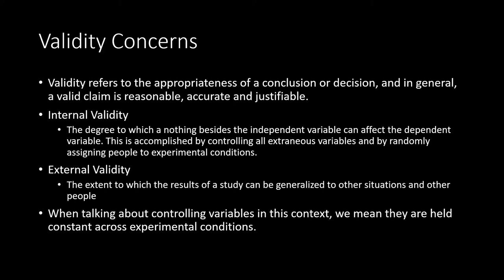Validity is how accurately something represents whatever it is trying to represent. While there are multiple forms of validity we are concerned with in experiments, the two primary ones are internal and external validity. Internal validity refers to the degree to which nothing besides the independent variable can affect the dependent variable. This is accomplished by controlling all extraneous variables and by randomly assigning people to experimental conditions. An experiment is high in internal validity when we can be sure that only the piece we modified or manipulated is driving the change. If there are all kinds of other possible explanations for the change we're seeing, the experiment lacks high internal validity.